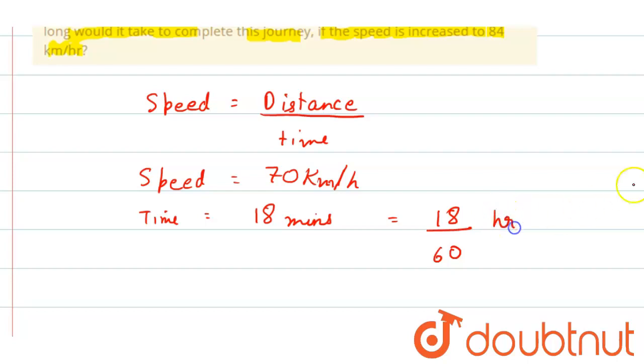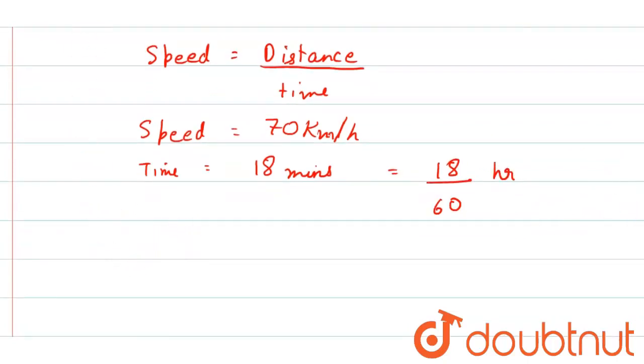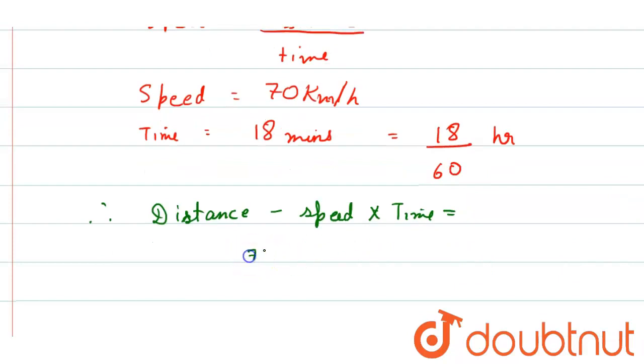So therefore, distance equals speed into time, is equal to 70 into 18 by 60. That will be 7 into 3, that is 21, right? That is 21 kilometer.